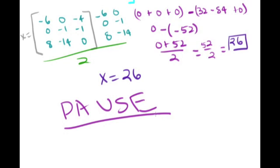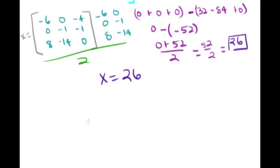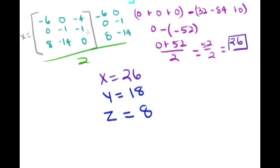Pause now and try to find y and z on your own. If you did your math correctly, you should get y = 18 and z = 8. If you got it wrong, go back and check your work — you can make a lot of sign errors when multiplying these diagonals. Thanks for watching this video on Cramer's Rule part two.